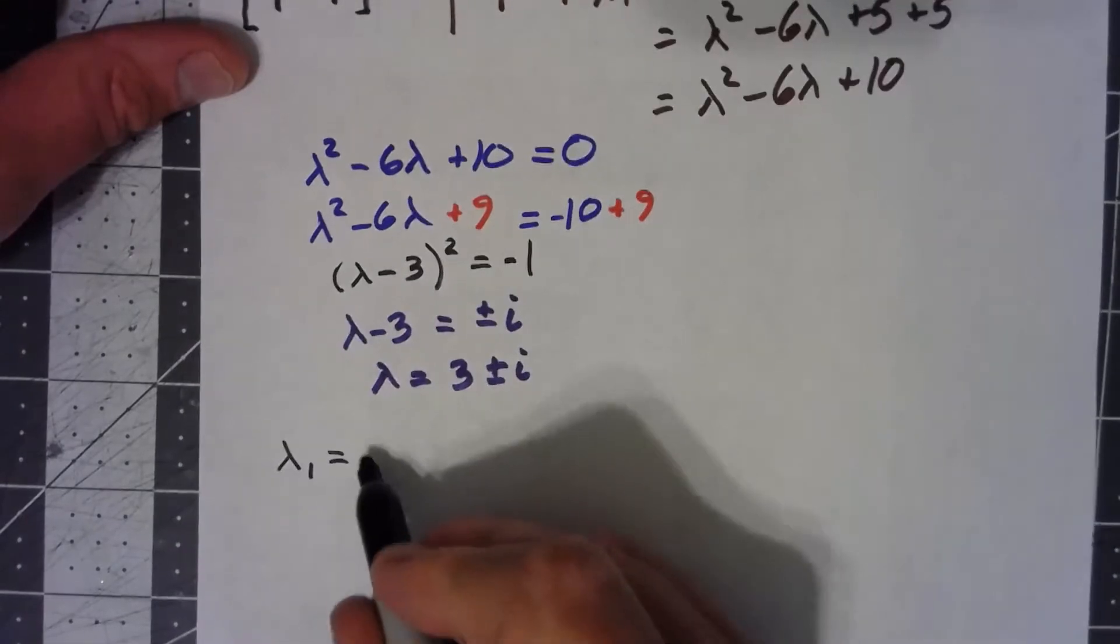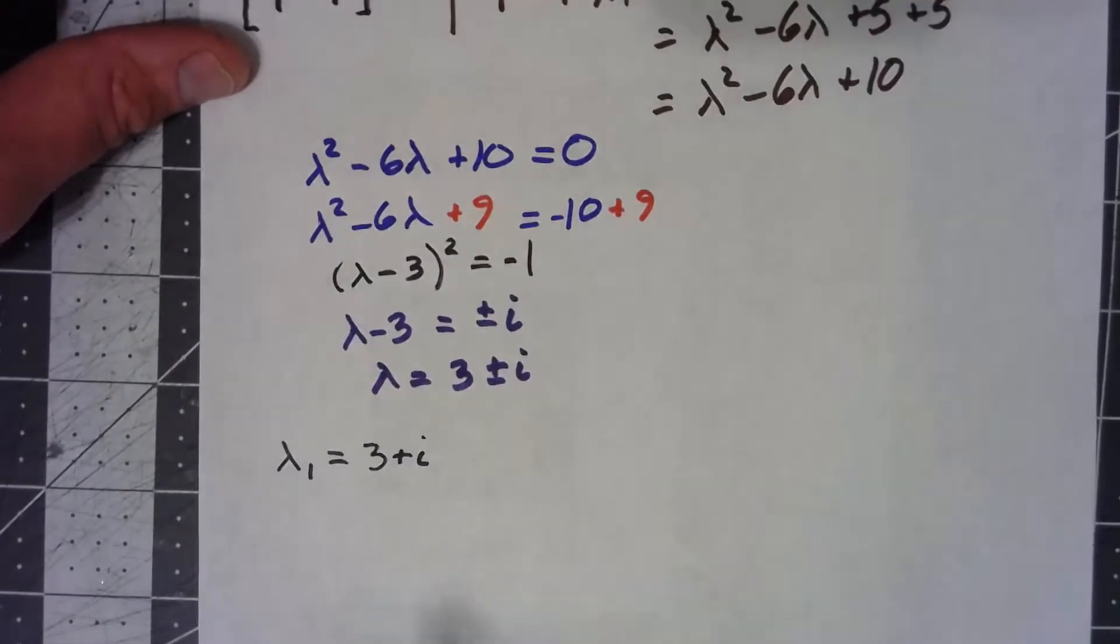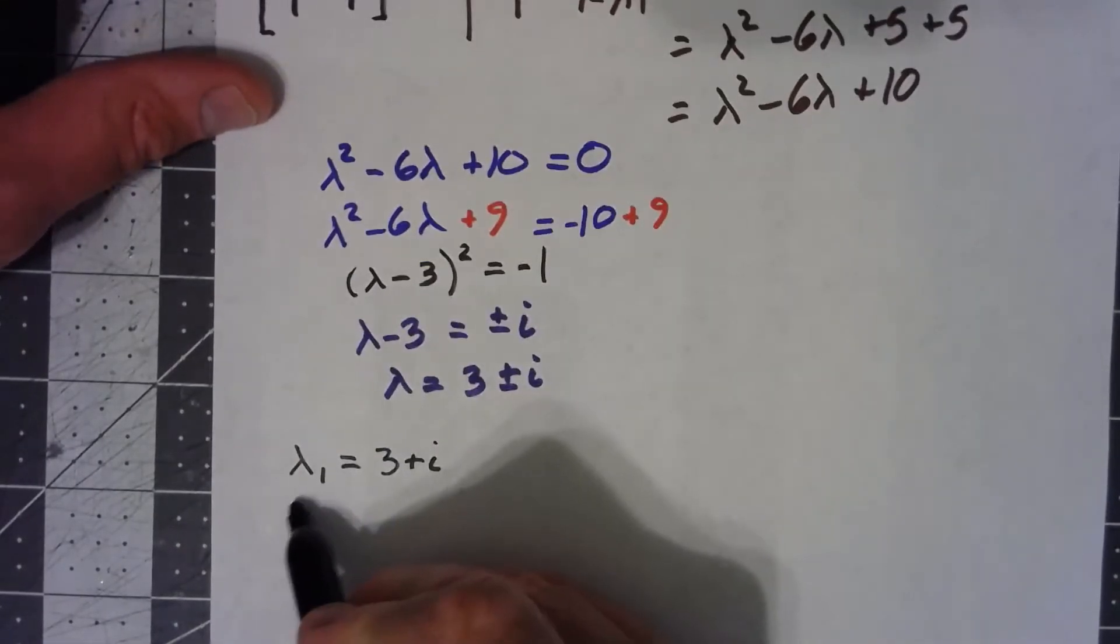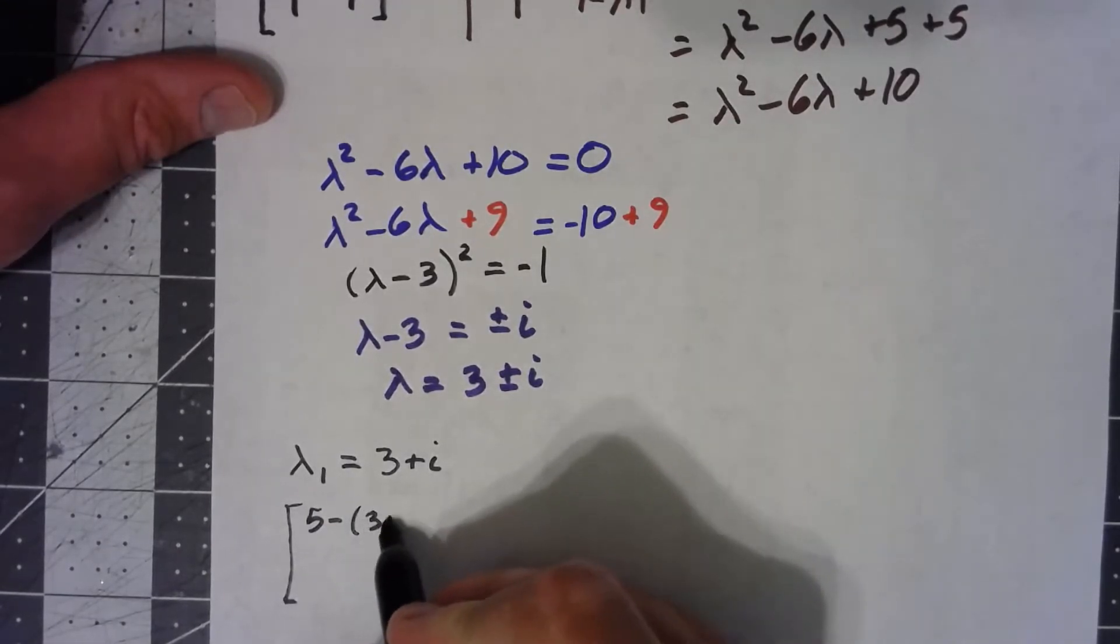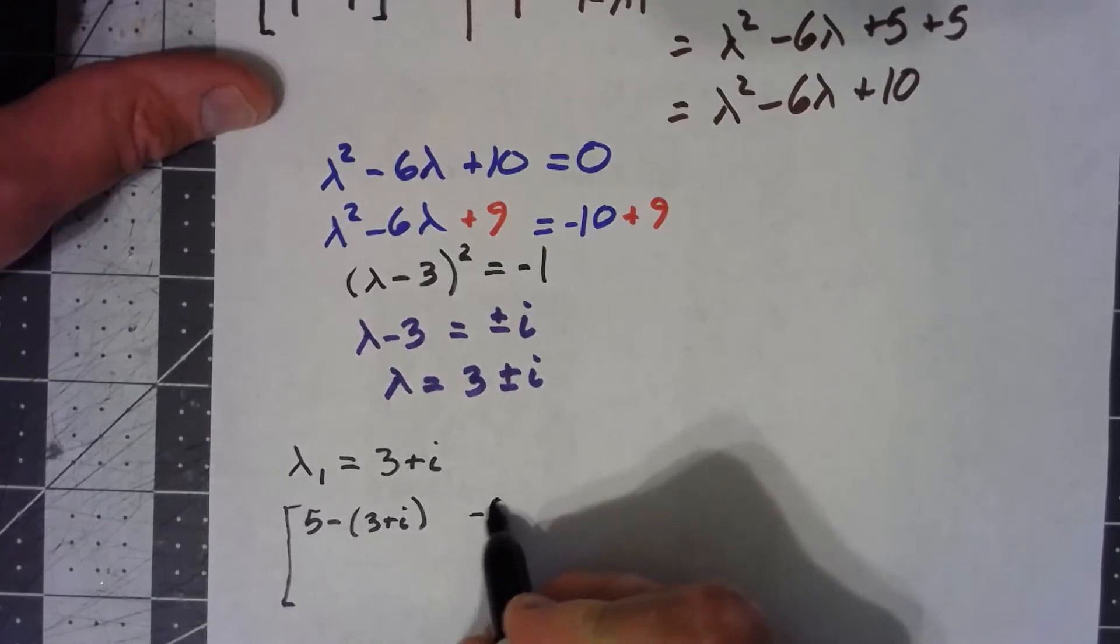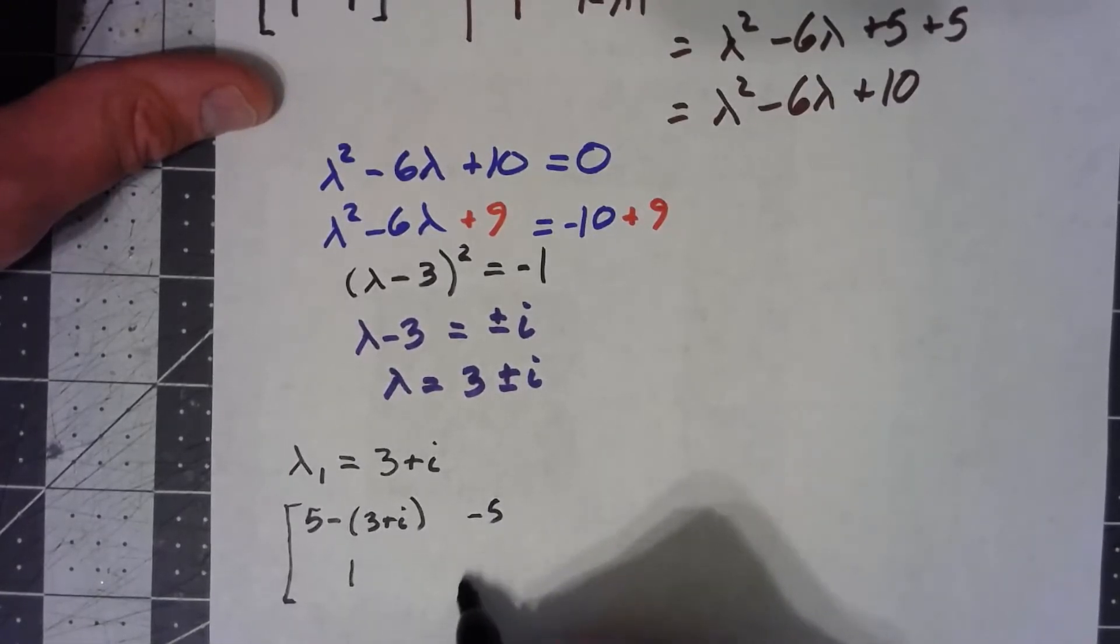If we've got lambda is equal to 3 plus i, we get 5 minus 3 plus i, negative 5, 1, 1 minus 3 plus i.